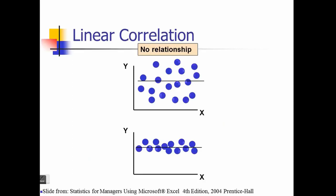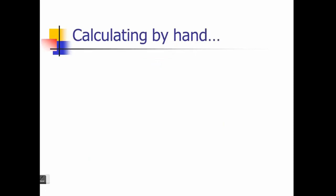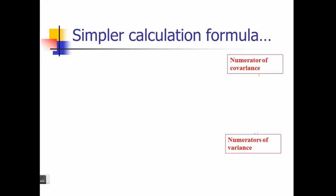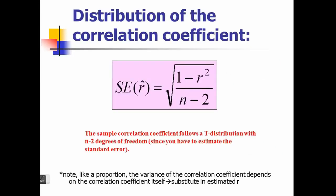We can calculate correlation using a formula. Most modern software has built-in functions to calculate correlation, but we can certainly calculate it by ourselves as well using the formula. You can also have the distribution of the correlation with standard error, and we will talk more about what standard error is and how it helps us later in this lecture.